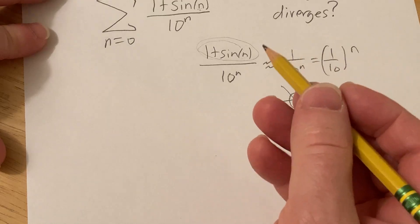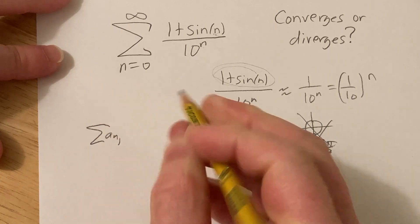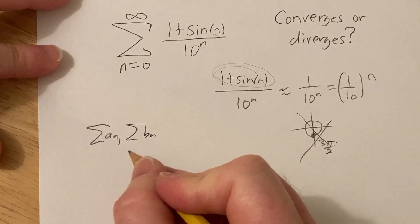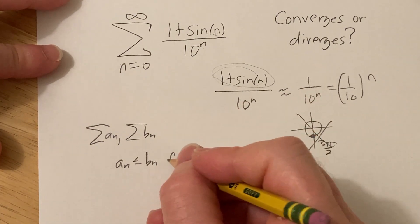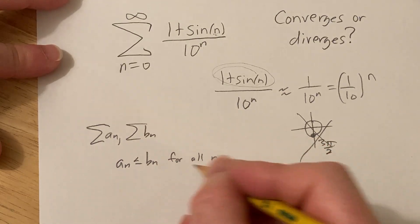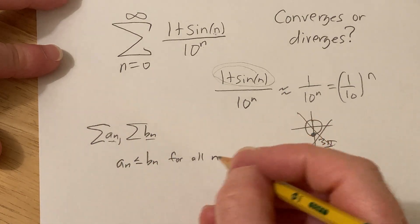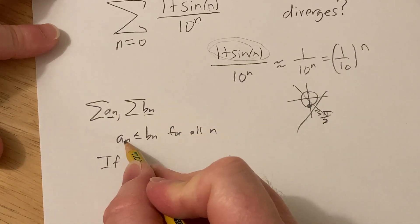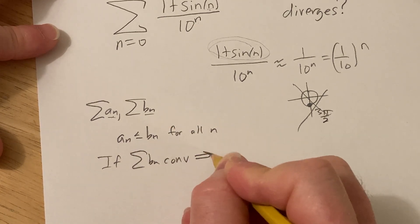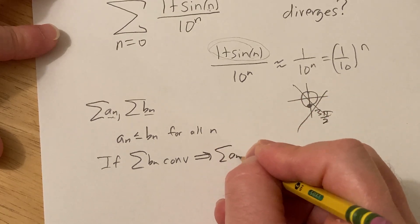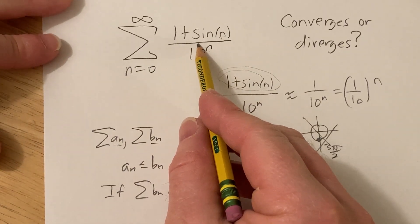For the direct comparison test: if you have a series a_n and a series b_n, and you know that a_n ≤ b_n for all n, and both a_n and b_n are positive, then if the b's converge, the a's also converge. That's the idea — we're going to show that this series has smaller terms than something that converges.